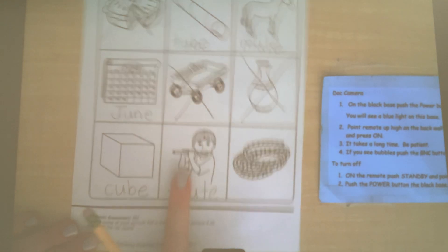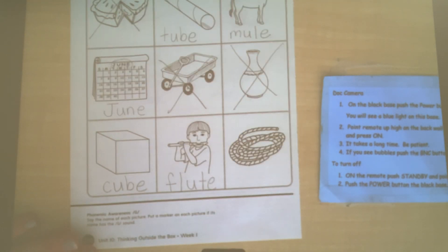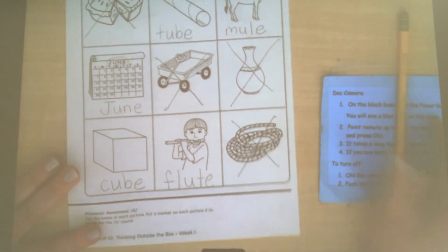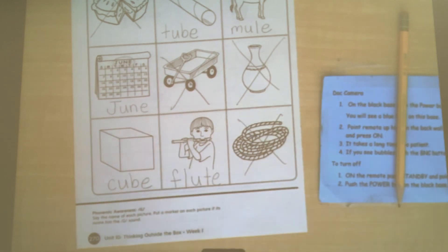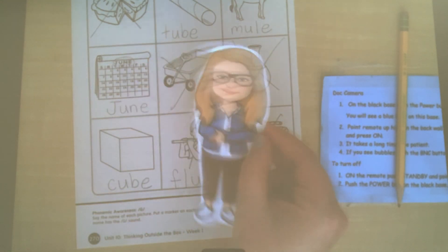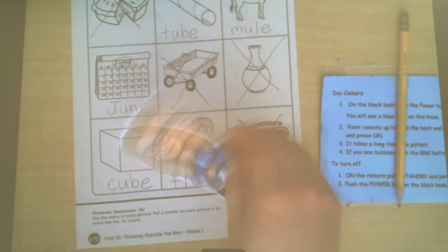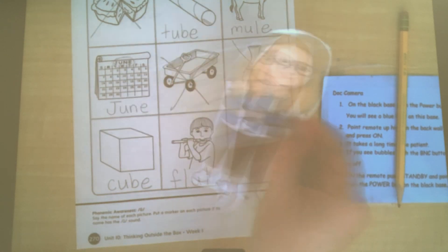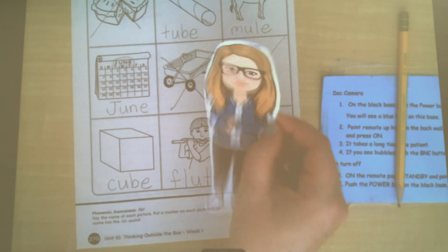Don't forget the L. F-L-U-T. Bossy E. Without that L, it would just be a fut. Fut. What? That's not what that is. And then we have a rope. Cross that out. All right. Five second dance party. Are you ready? Very nice dancing.